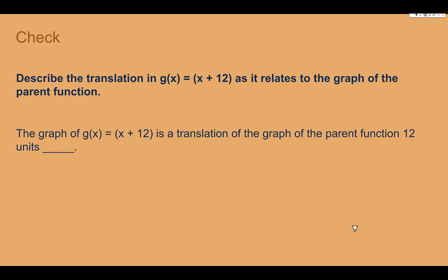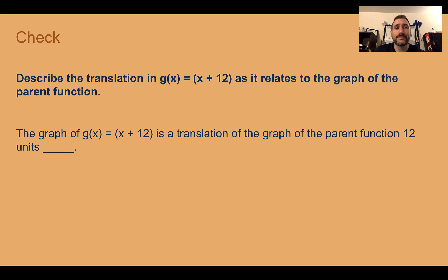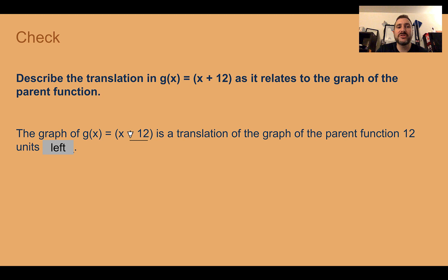Check your understanding: read the transformation and describe how it relates to the parent function. The answer is that it moves 12 units to the left — the opposite of the sign shown gives the negative direction, 12 units.